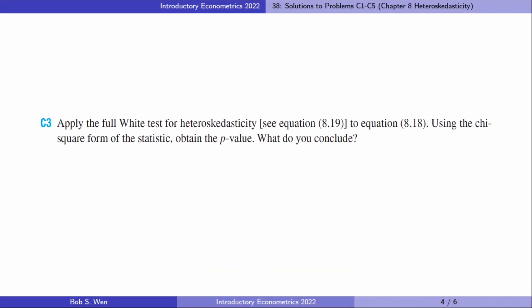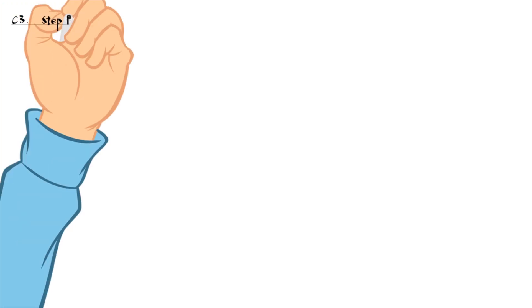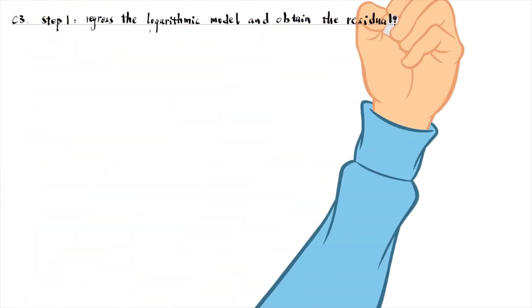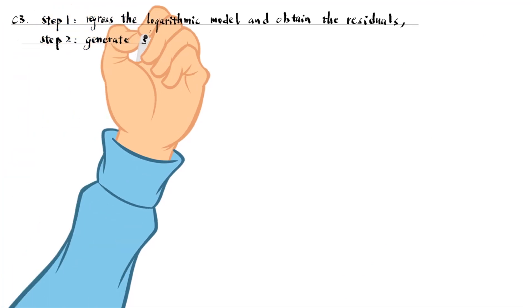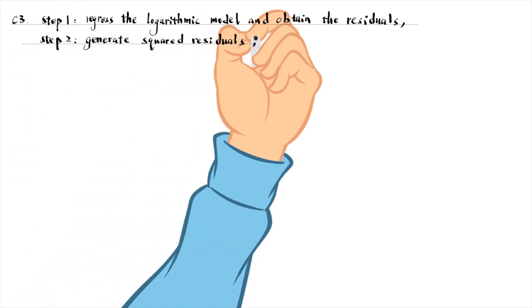Let's find answers to computer exercise 3. It is about the White test for heteroscedasticity. After we estimate the logarithmic model, we use the predict command with the residuals option to obtain the OLS residuals. Then we generate the squared residuals. After that, we consider the White test for heteroscedasticity using the squared residuals. Since we use the squares and the interaction terms of all explanatory variables in the full White test, the first step is generating them.